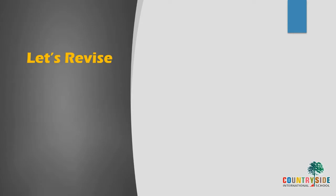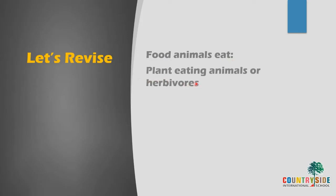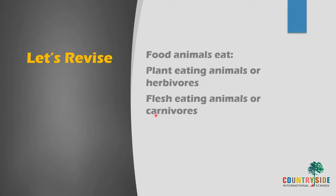We also studied about the food animals eat. Animals are divided according to the food they eat. Animals who eat only plants are called plant-eating animals, or herbivores. Animals who eat only the flesh of other animals are called carnivores, or flesh-eating animals. And omnivores are animals that eat both plants and flesh of other animals.